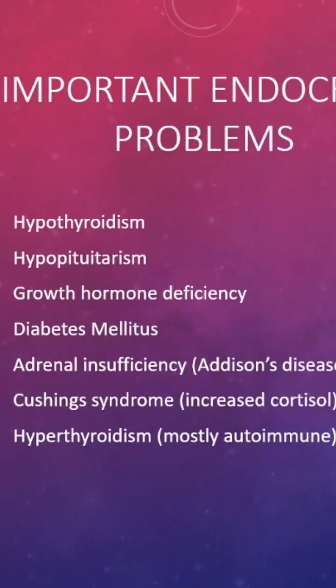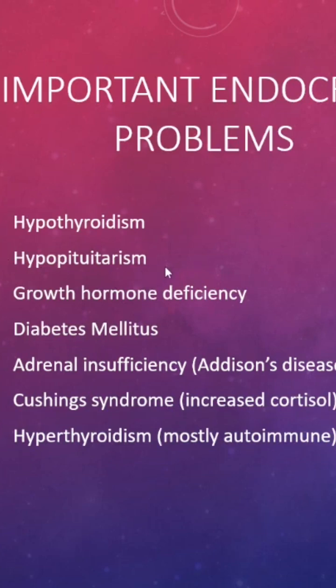Hypothyroidism is very common and very important in pediatrics, including congenital hypothyroidism — you can refer to my video on the topic. It can lead to impaired brain development. Hypopituitarism can affect almost all other hormone systems, including growth hormone, thyroid, and adrenal hormones. I will make a short case video on hypopituitarism which you can also refer to.